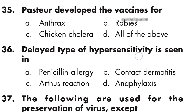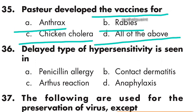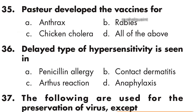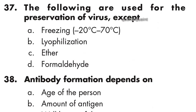Question 35: Pasteur developed the vaccine for anthrax, rabies, and chicken cholera — option D, all of the above, is right. Question 36: Delayed type of hypersensitivity is seen in contact dermatitis, option B is right.